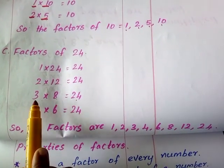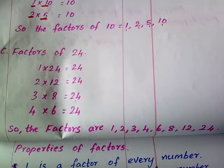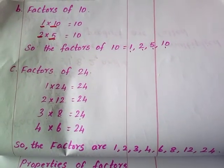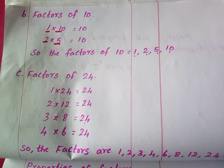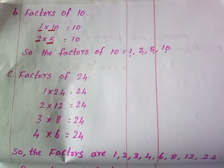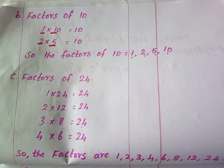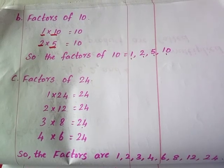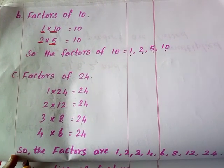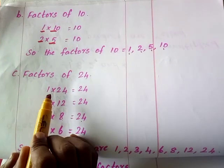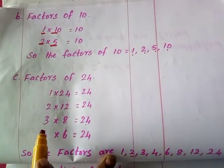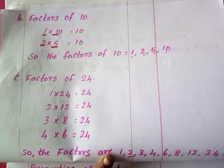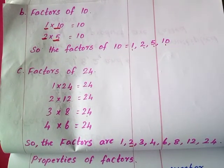Sixth table is already written. Seventh table we don't have. Eighth table is already written here. So just check the tables and find the factors like this. We also have division methods which I will discuss later on, and we can use divisibility rules to find the factors easily — that we will discuss later on. So this is one simple method. The factors of 24 are: 1, 2, 3, 4, 24, 12, 8, and 6. So I have listed out all the factors of 24.